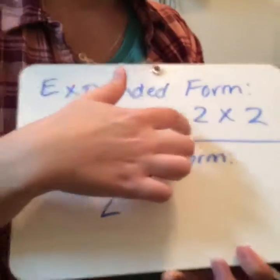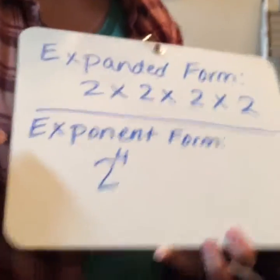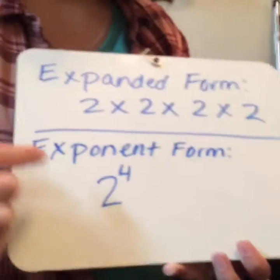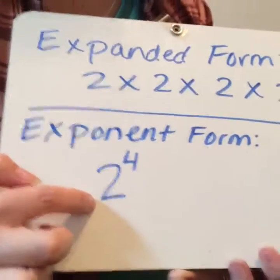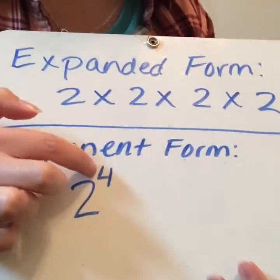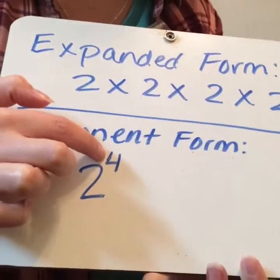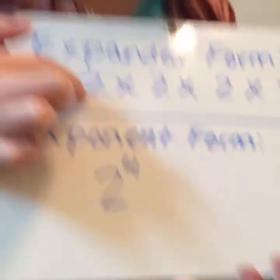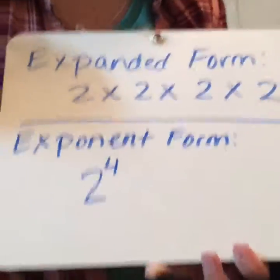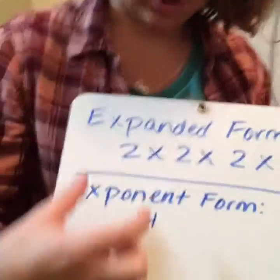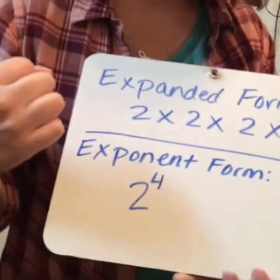2 times 2 times 2 times 2, or I can write it in exponent form, which is 2. 2 is our base and 4 is our exponent, or our power. And we write 4 because we have 1, 2, 3, 4 twos present. So this is a much smaller way to write the expanded form.